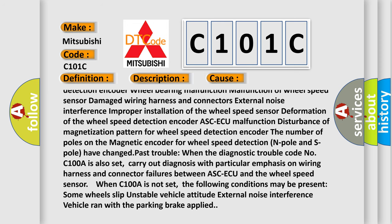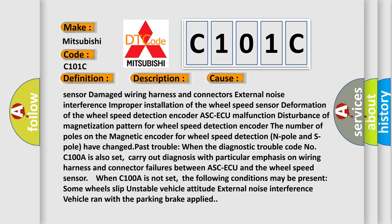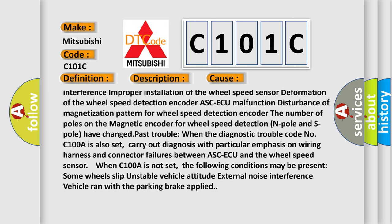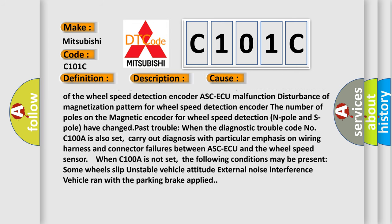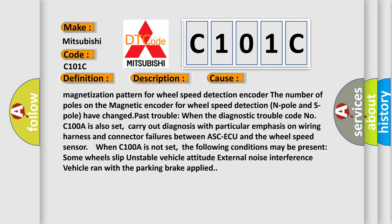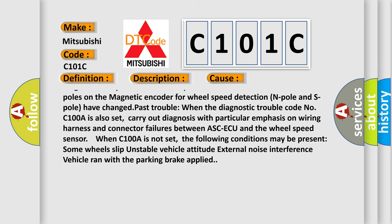Disturbance of magnetization pattern for wheel speed detection encoder. The number of poles on the magnetic encoder for wheel speed detection - N pole and S pole have changed. Past trouble: When the diagnostic trouble code C100A is also set.